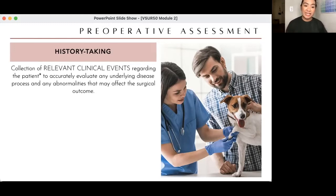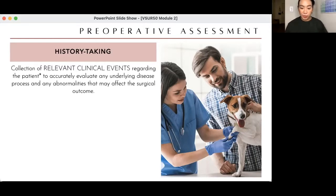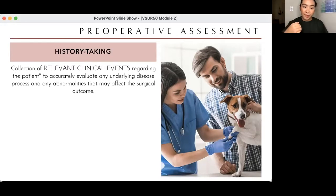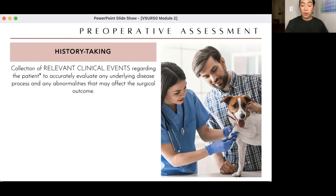History taking is the collection of relevant clinical events. When I say relevant, these are just the things related to what you want to know about the animal. The information you can get is as good as the questions you ask. As in the TV series House — everyone lies — so your history taking is only as good as your investigative power with the client.